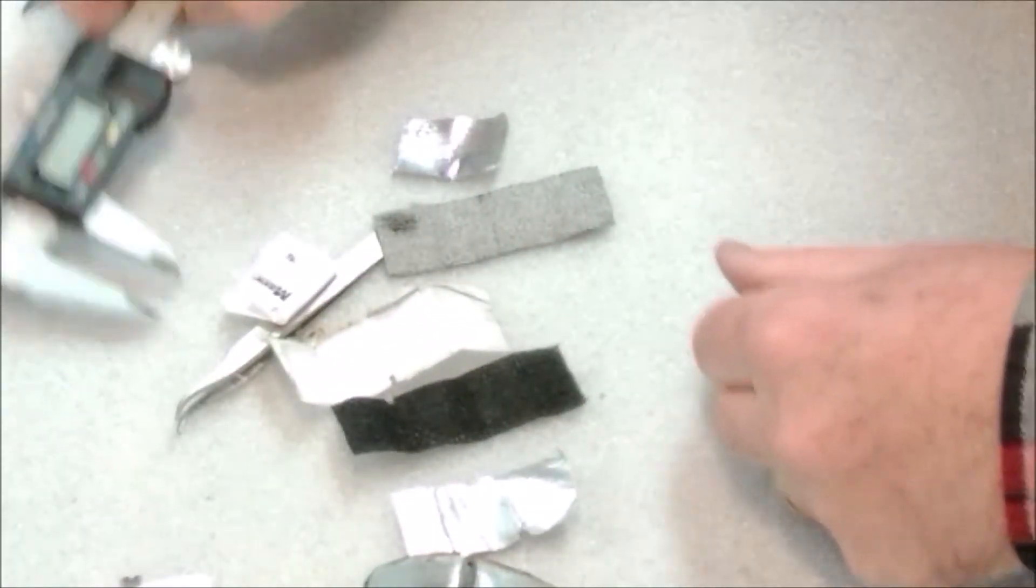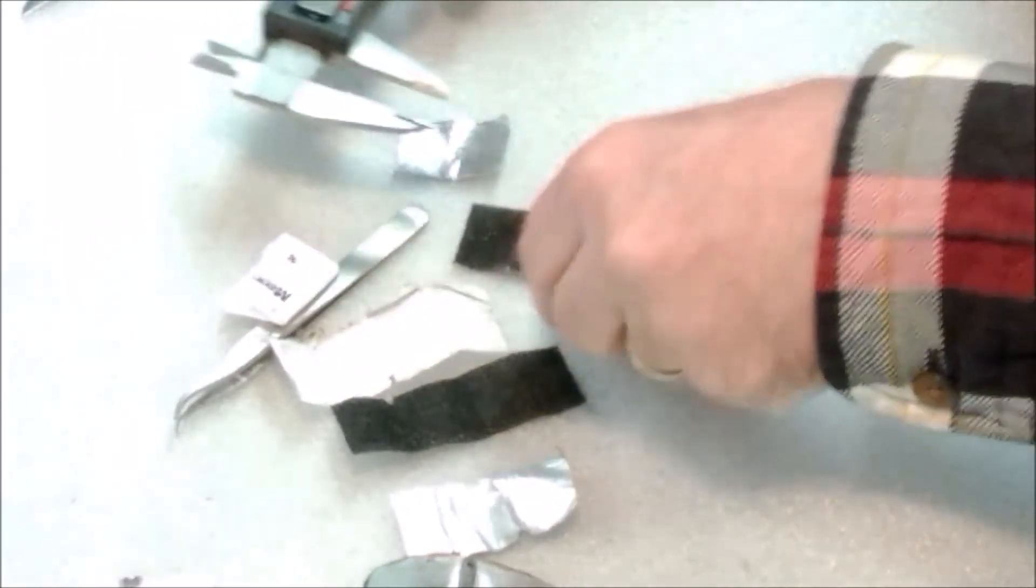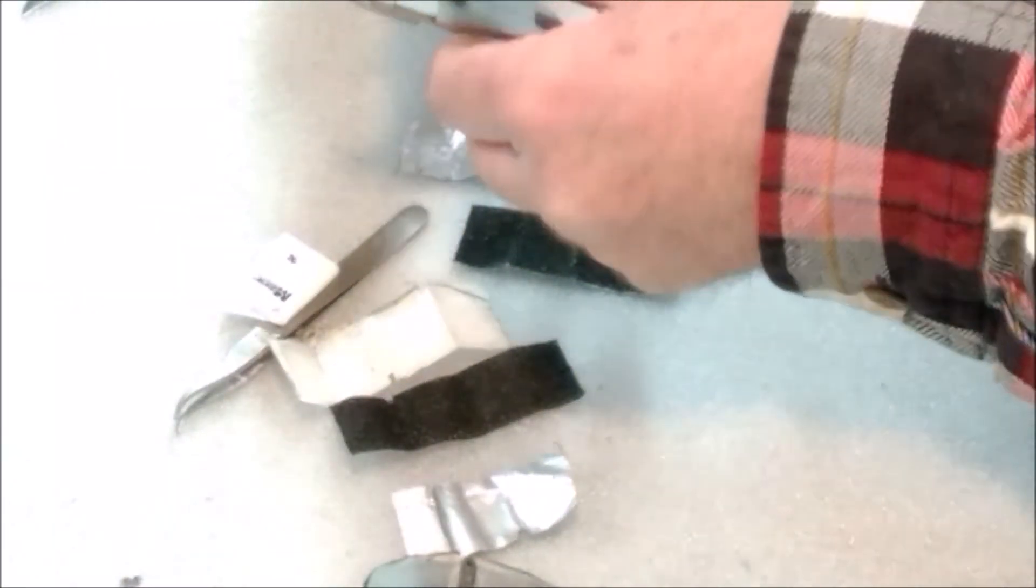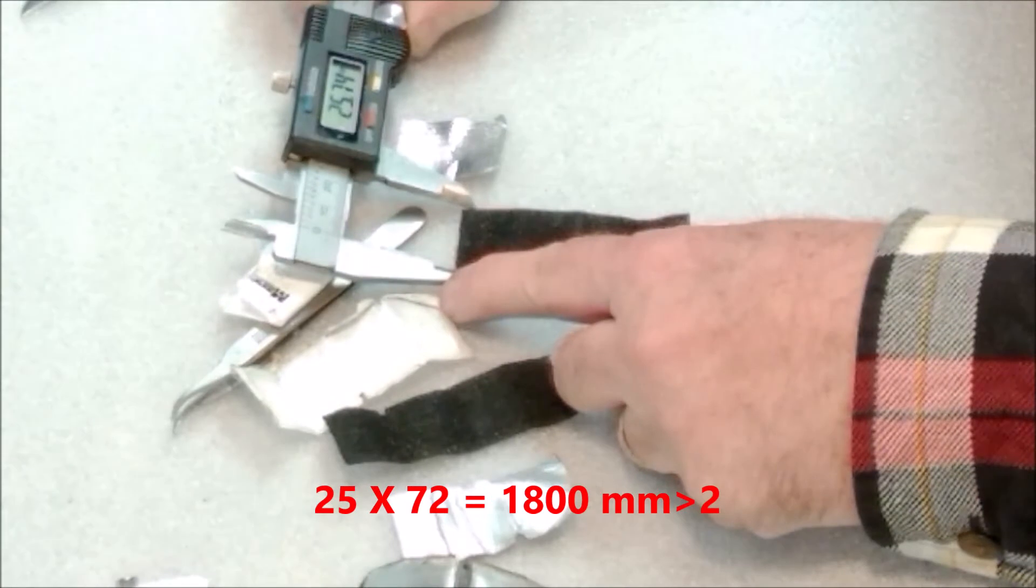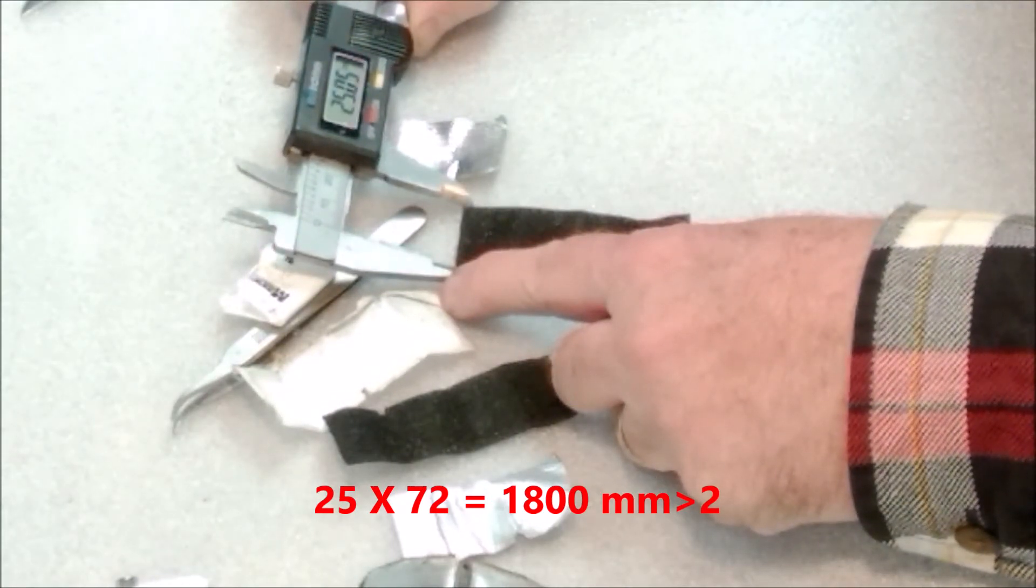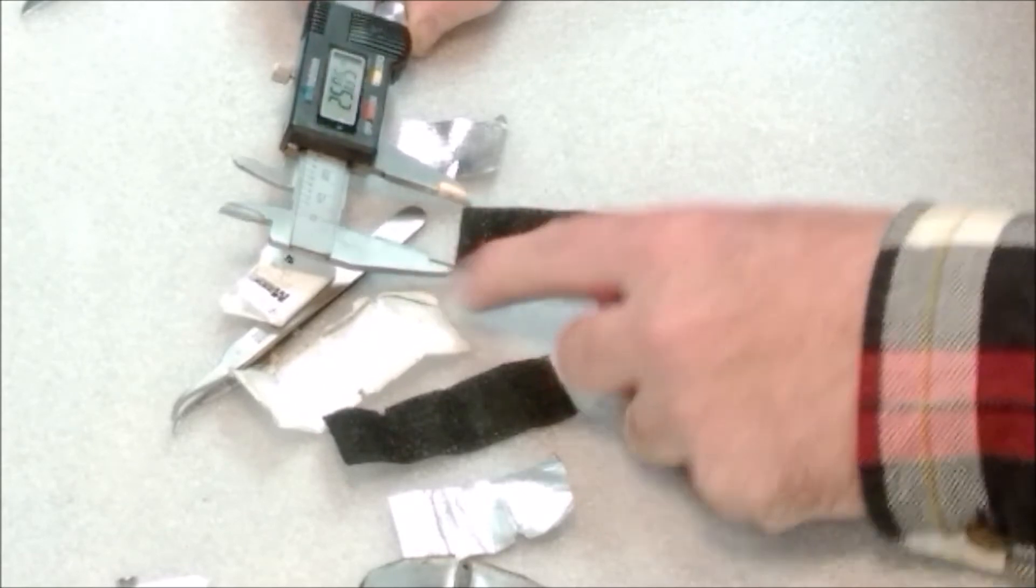If we wanted to calculate the area of this, let's take the area of one of these electrodes. Okay, we've got pretty close to, well, I'm gonna call it exactly 25 millimeters wide.